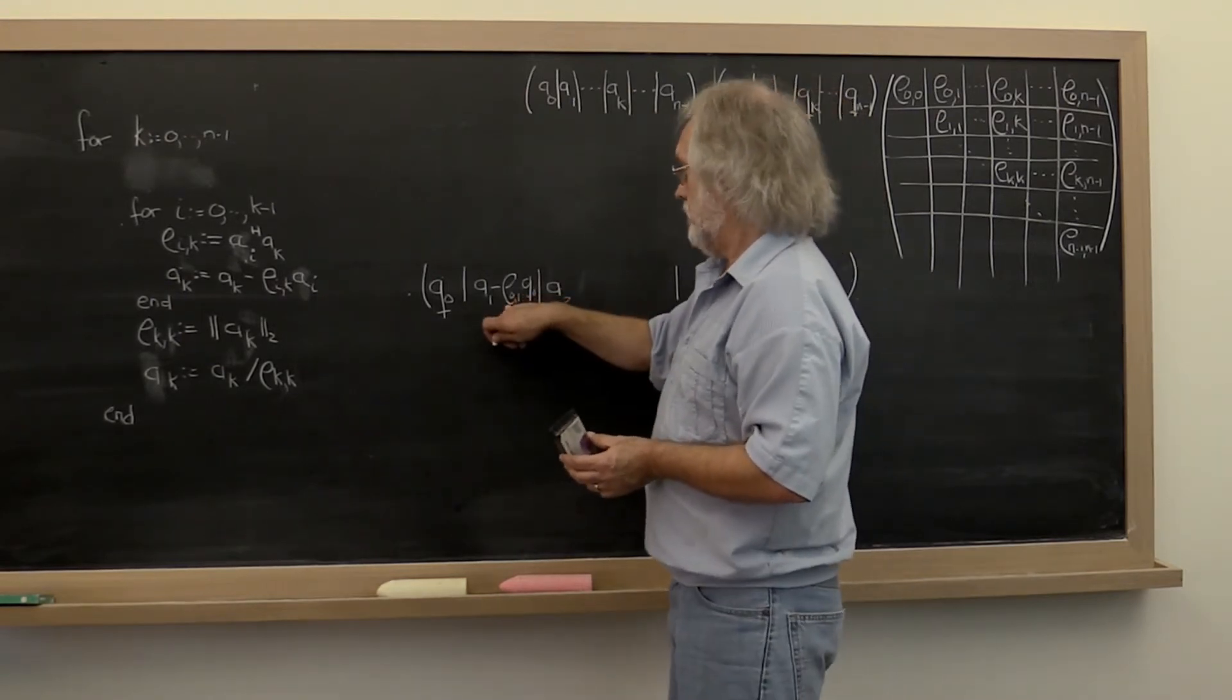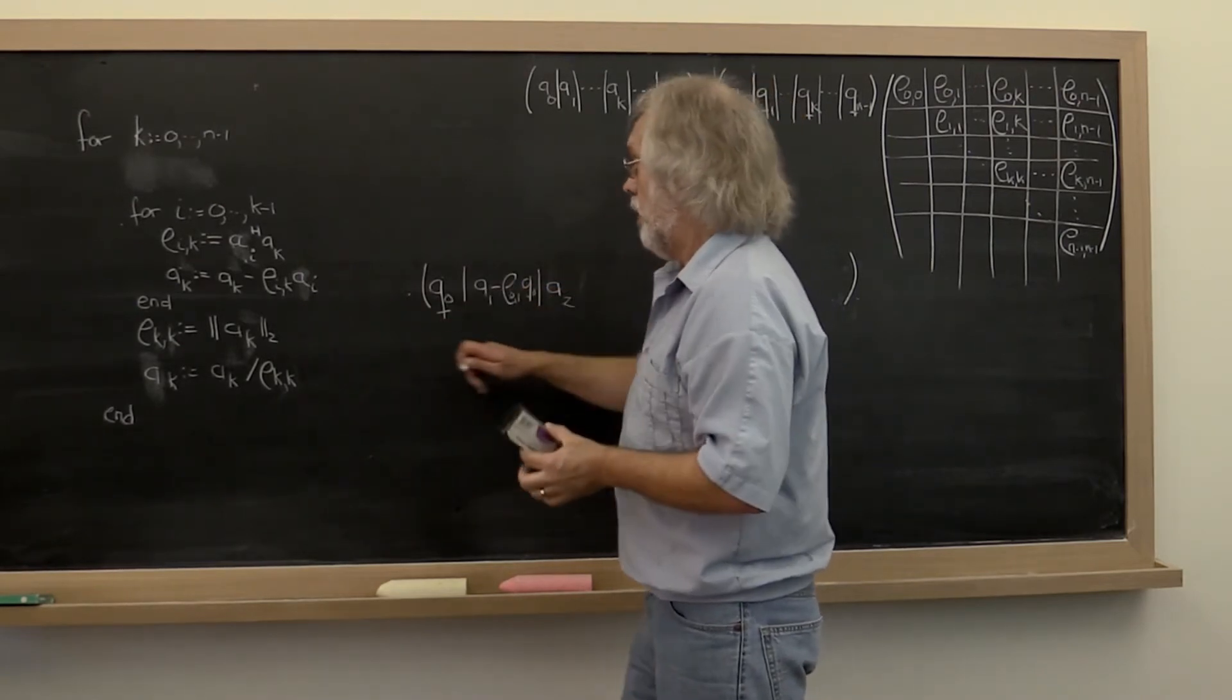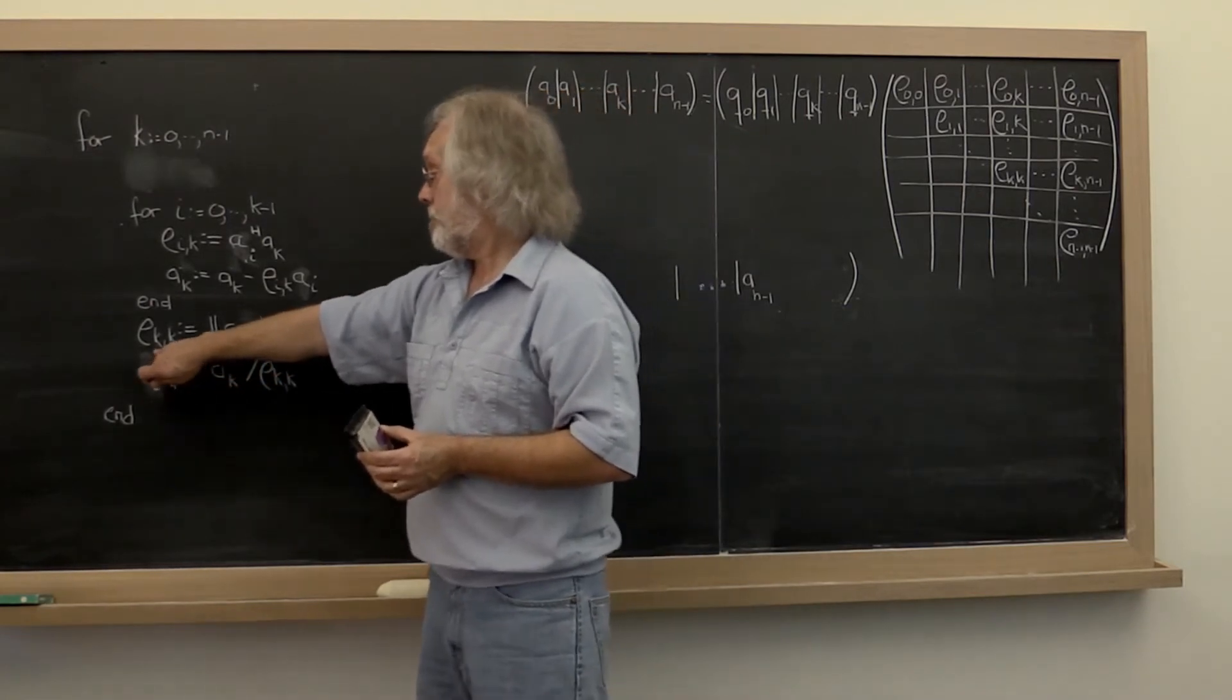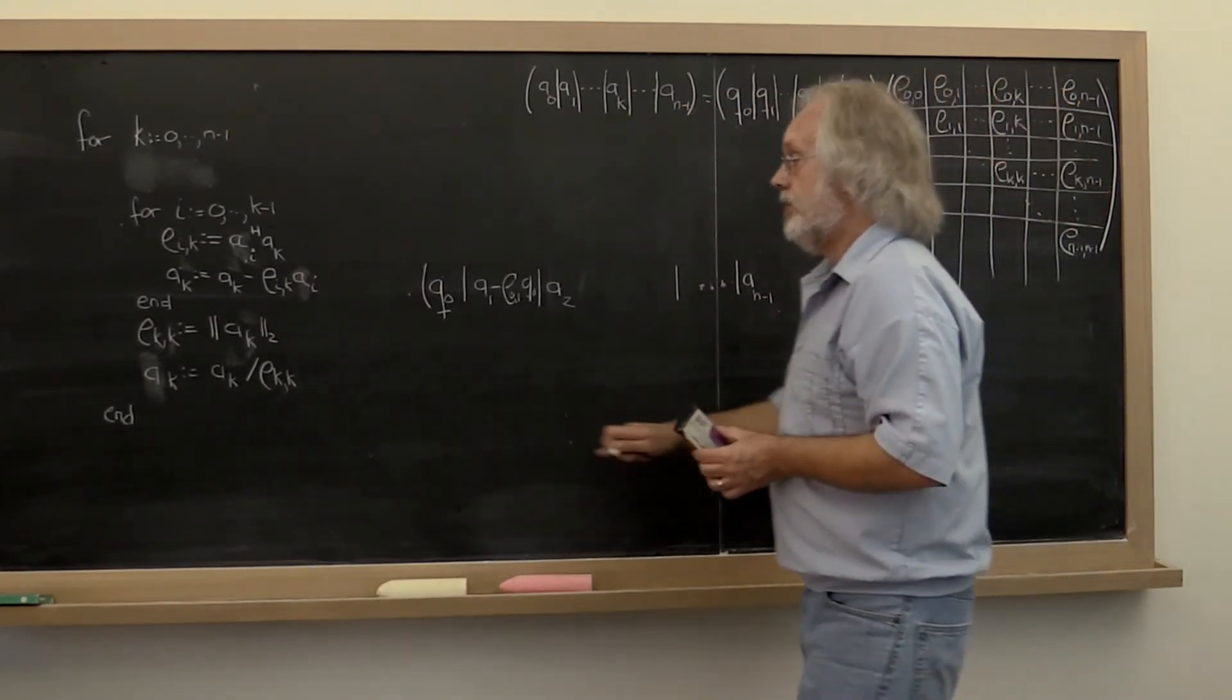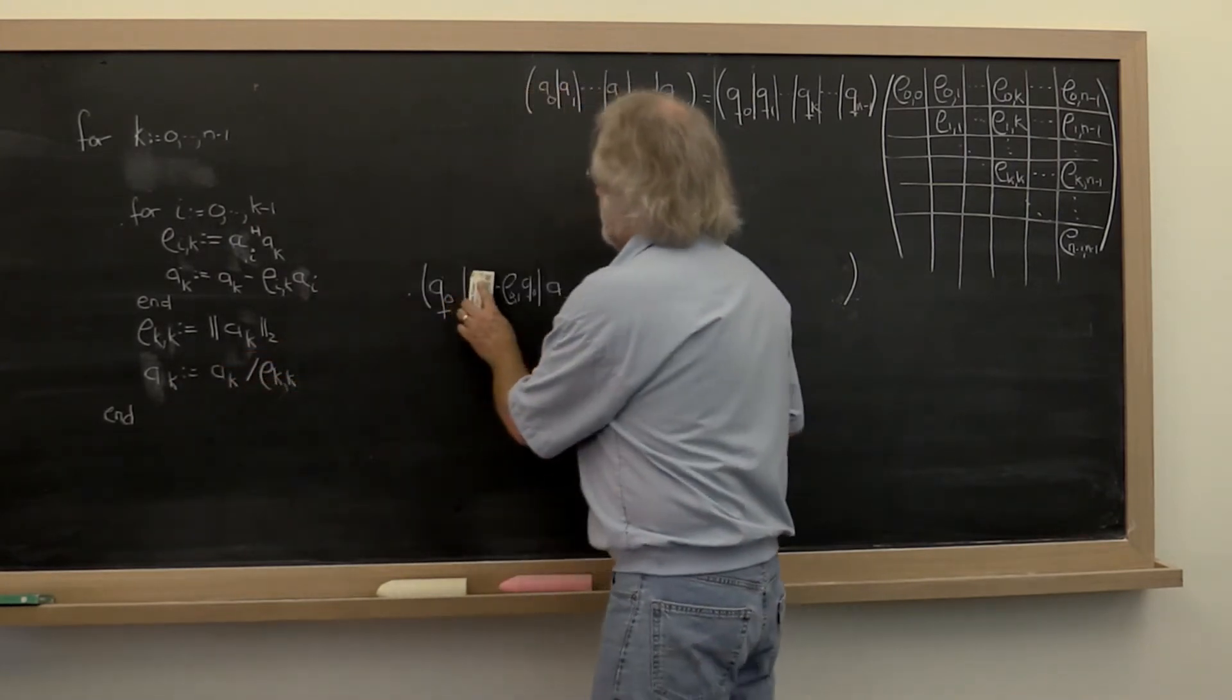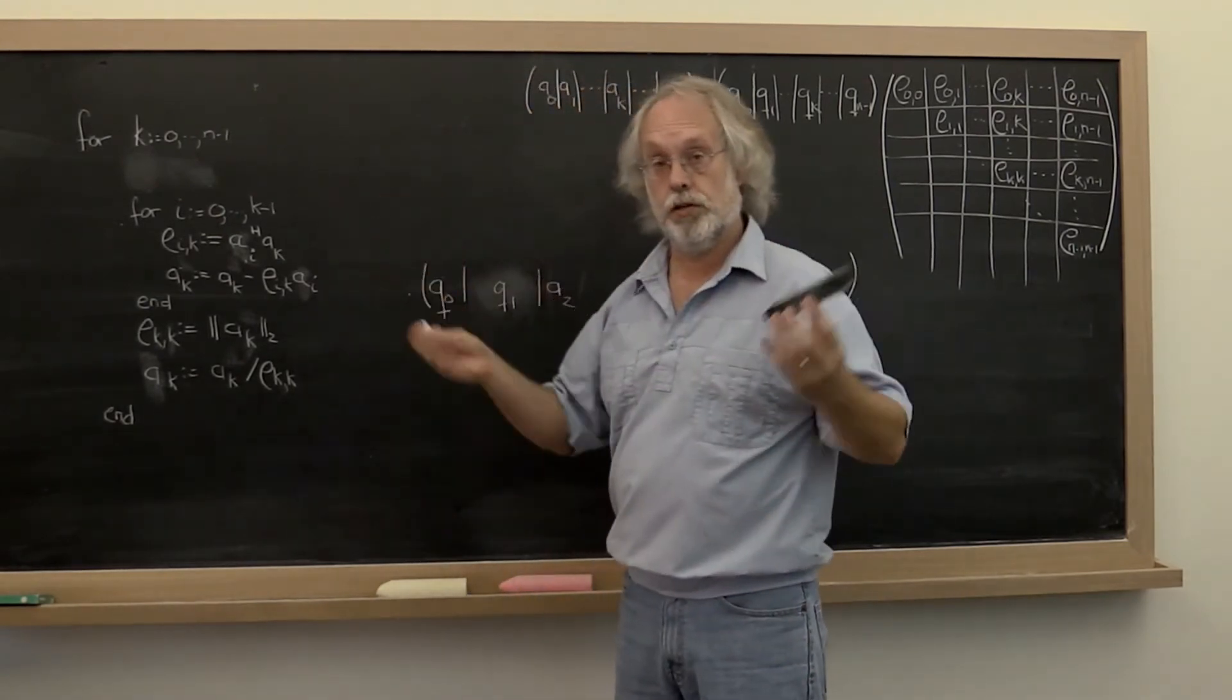Okay, at that point that actually is the component orthogonal to q_0. So that's all good. Then we compute its length. So that computes this entry in r right here. And then we overwrite that column with the final result so that at that point this here equals q_1. So far so good.